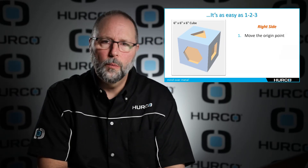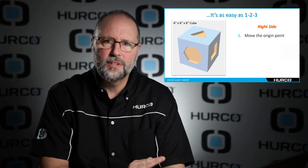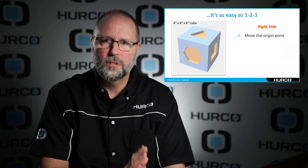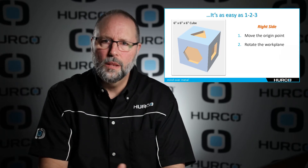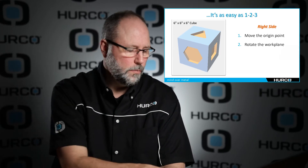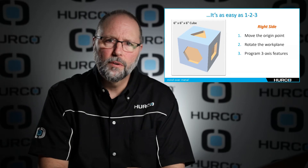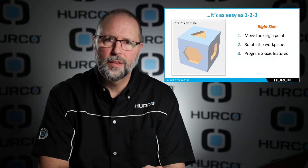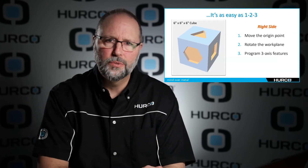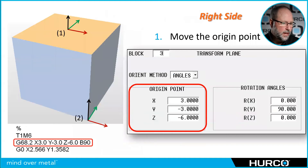So we need to do a couple things. First, we need to move the origin point somewhere on the right side of the part that makes sense based on our dimensions on our print. Then we need to rotate the work plane so the tool is going to be perpendicular to whatever side of the part we're working on. Then we can program whatever three-axis features we need, referencing that new origin point with the rotation angle. When we're finished, we'll cancel that, which will revert us back to the top center of the part.